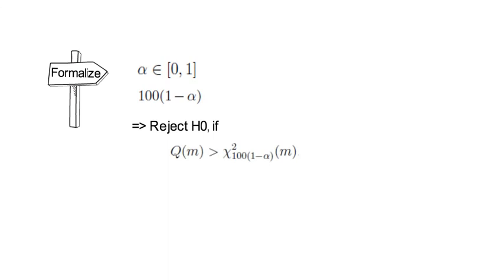Otherwise, you fail to reject H0. That decision rule is equivalent to rejecting H0 if the respective p-value is smaller than the alpha.